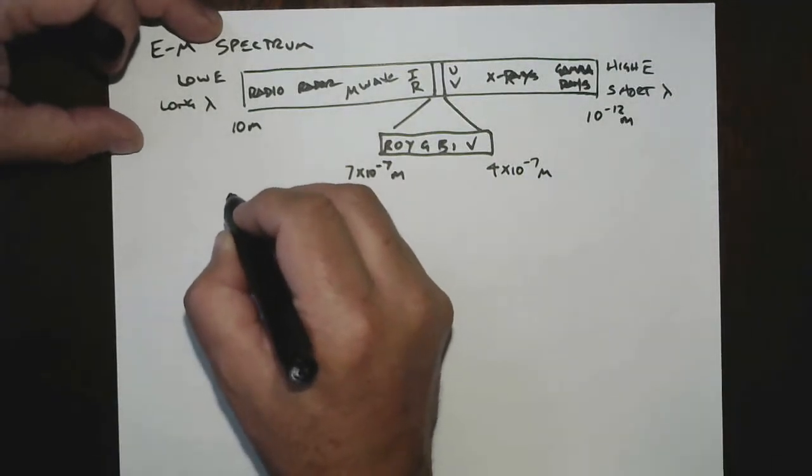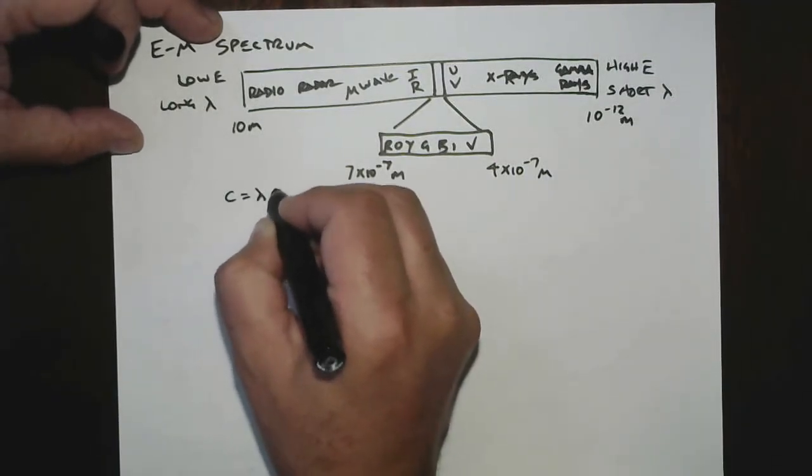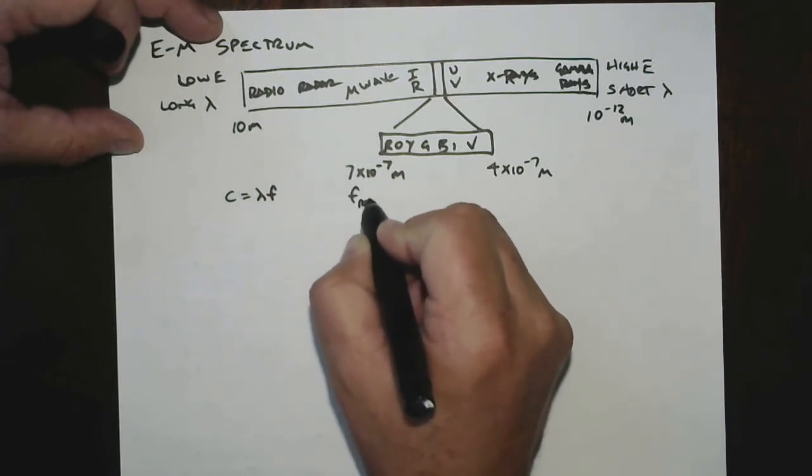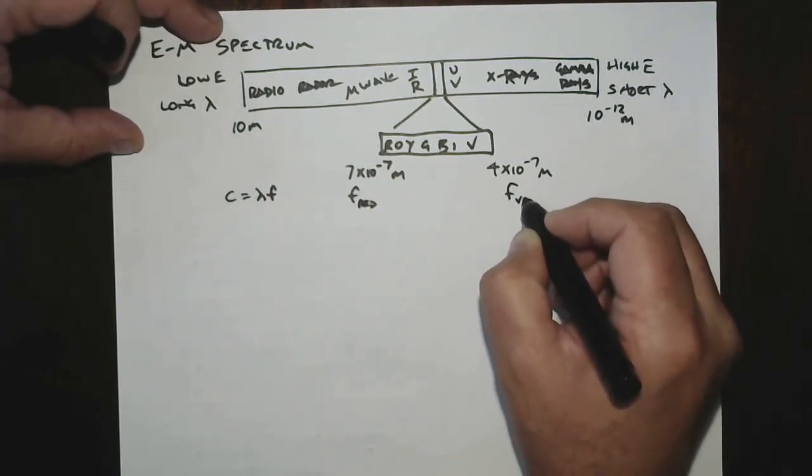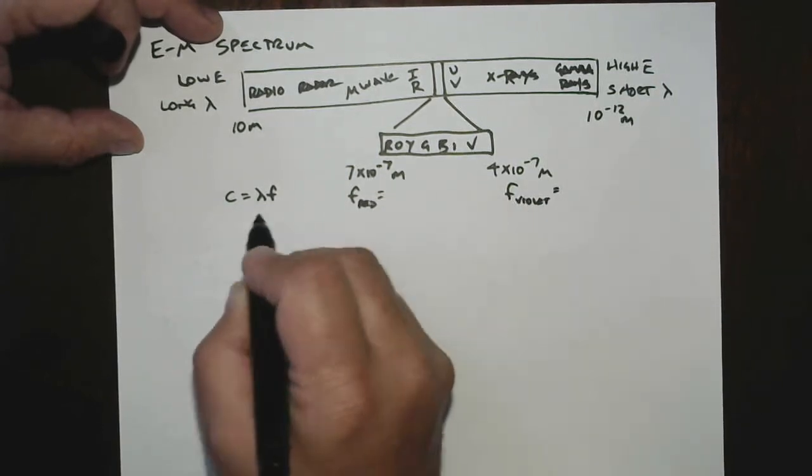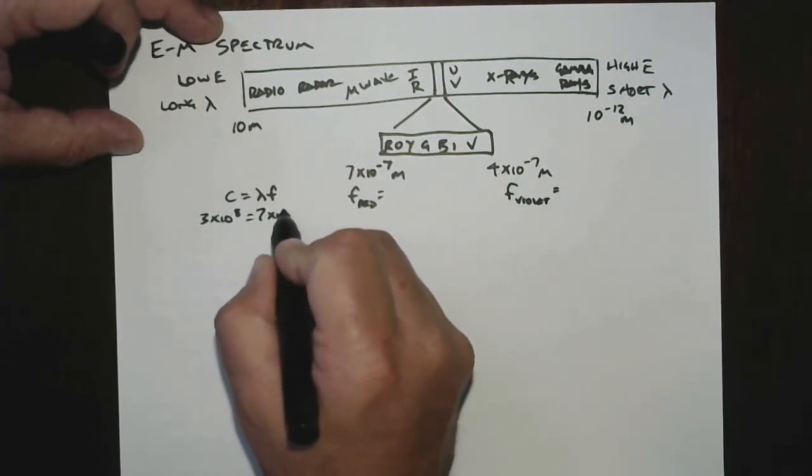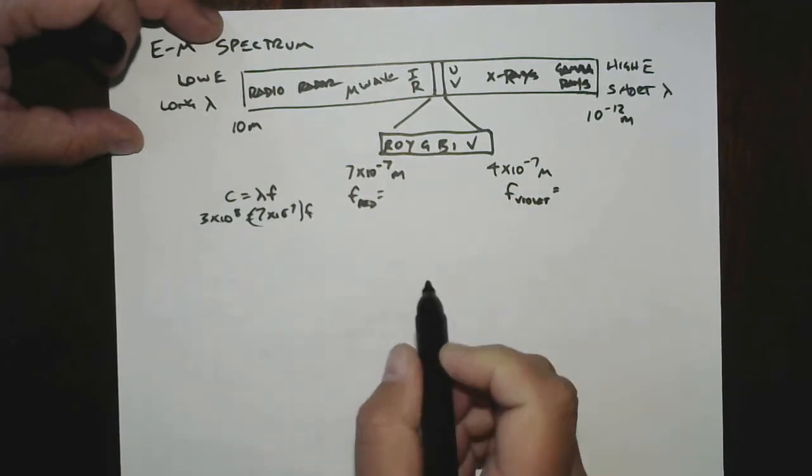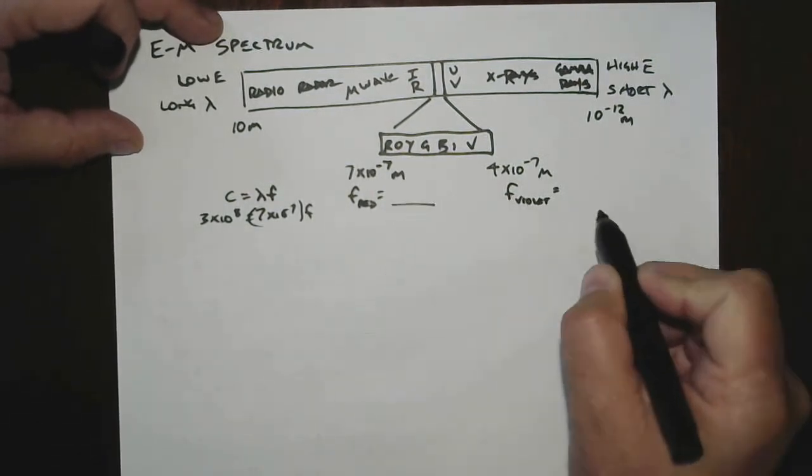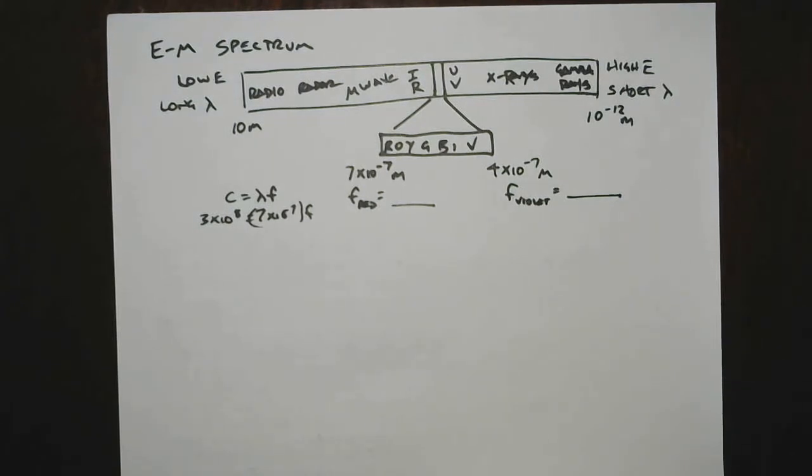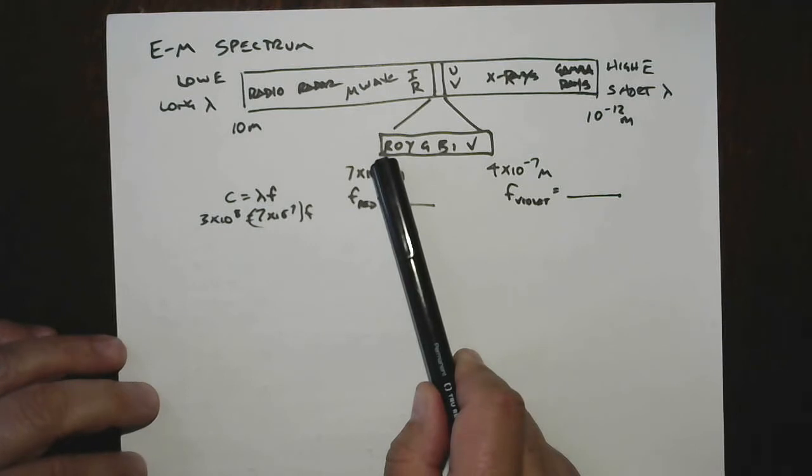We can use our wave equation, which for light is C equals lambda F. And we could figure out what the frequency is for red and what the frequency is for violet. And I recommend that you do this using 3 times 10 to the 8 for the speed of light. And then put in, say for example, 7 times 10 to the minus 7. And then frequency, do a little algebra and find out what the frequency is for those. Find these two numbers. I'll utilize them later on a test or a homework. Whatever assessment we're going to use to give those who want to get some additional credit.